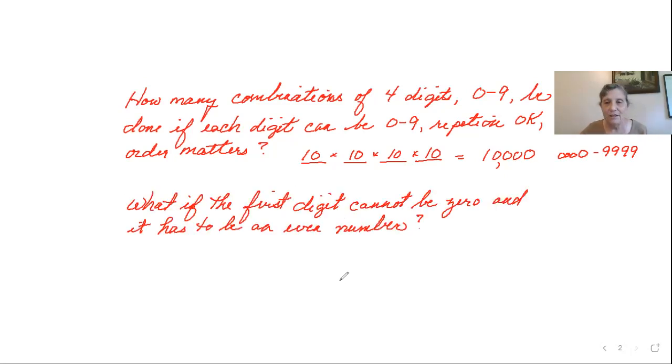What if the first digit cannot be zero, so the first digit has to be at least one, and it has to be an even number? So we've still got a four-digit number. If we're not including numbers from zero to 999, the first digit has to be at least one, so this has to be at least the number 1,000. Then this has only nine possibilities instead of 10. What if it has to be an even number? Then that means that this four-digit number has to end with 0, 2, 4, 6, or 8.